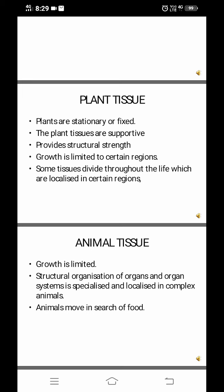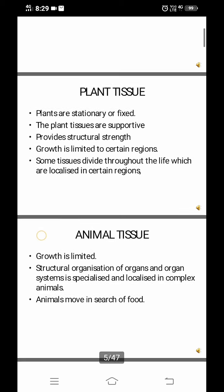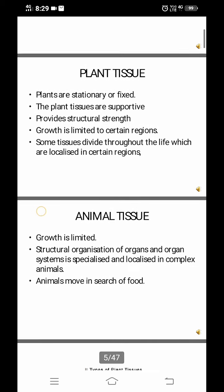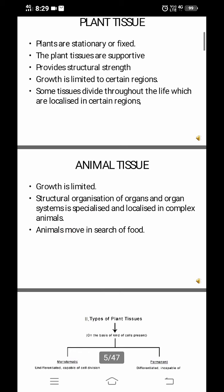The growth is limited to certain regions like the root tip or the stem tip. Some tissues divide throughout the life, which are localized in certain regions. While in animal tissue, the growth is also limited.